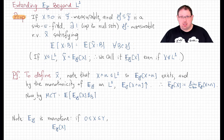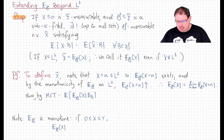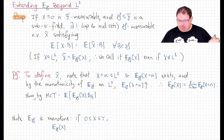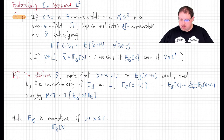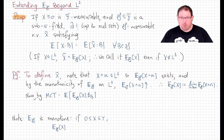We know that conditional expectation is a monotone operation: if X ≤ Y almost surely, then E[X|G] ≤ E[Y|G] almost surely. Since min(X, N) is an increasing sequence of functions as N increases, this sequence of conditional expectations is also non-decreasing. Therefore, pointwise, it has a limit — which might be infinite-valued and is not necessarily L1 — but in any case the pointwise limit exists. So we define the conditional expectation to be the random variable which is, pointwise, that limit.